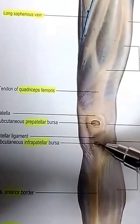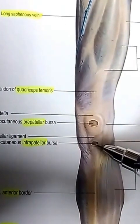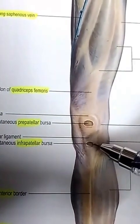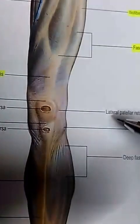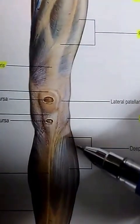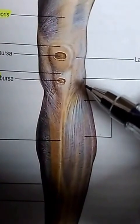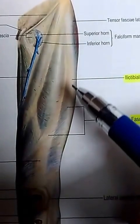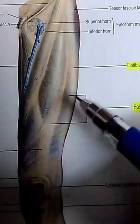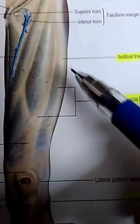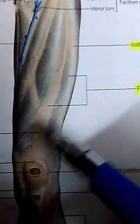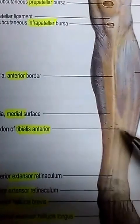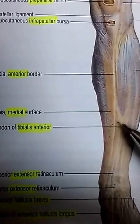In front of the patella you can see the pre-patellar bursa, and below the patella is the infra-patellar bursa. Also visible here is the lateral patellar retinaculum, the head of fibula, the deep fascia, the iliotibial tract, and the fascia lata.